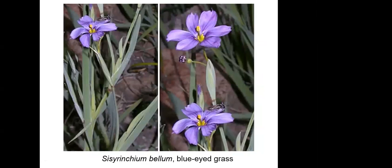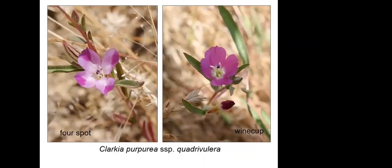Blue-eyed grass is actually not a grass at all — it's in the iris family. The leaves overlap the way a bigger iris would. Even though they call it blue-eyed grass, it really ought to be called yellow-eyed iris for the yellow stigma and the yellow pollen on the anthers.